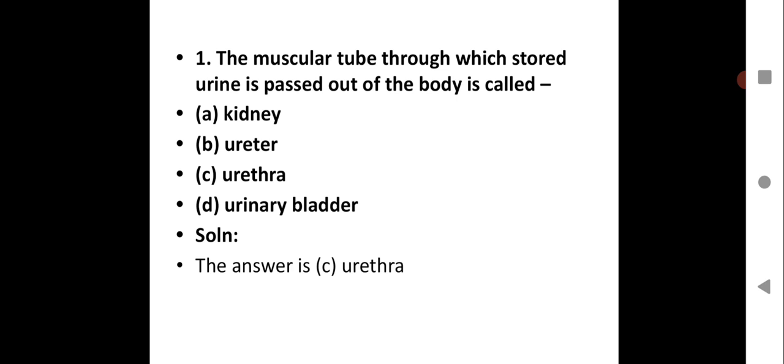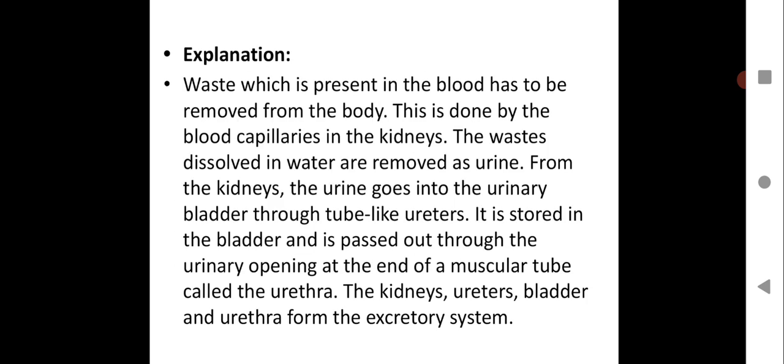The muscular tube through which stored urine is passed out of the body is called - option A kidney, option B ureter, option C urethra, option D urinary bladder. The correct answer is urethra, that is the muscular tube through which stored urine is passed out of the body.